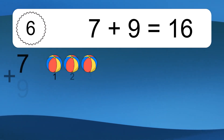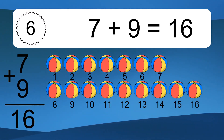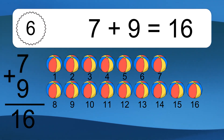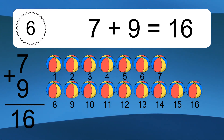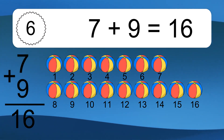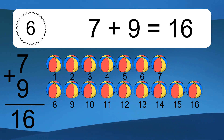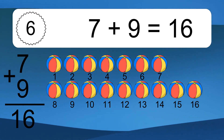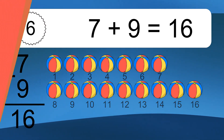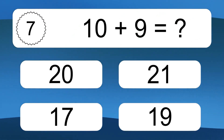7 plus 9 equals what? 7 plus 9 equals 16. Let's count it: 1, 2, 3, 4, 5, 6, 7, 8, 9, 10, 11, 12, 13, 14, 15, 16.